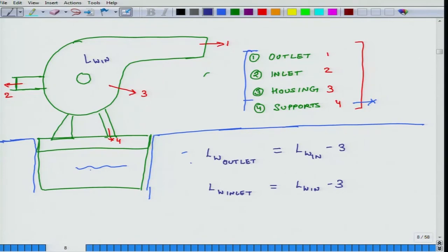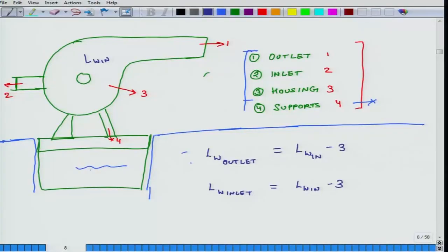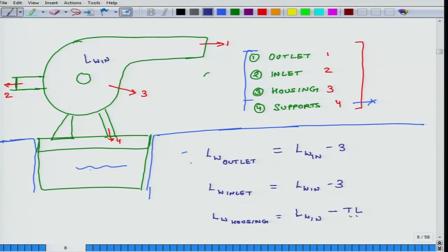The same argument holds for the inlet: LW_inlet = LW_in minus 3 dB. For the housing, LW_housing = LW_in minus the transmission loss. The transmission loss depends on how stiff the housing is — a flimsy housing vibrates easily and is a larger source of noise. The transmission loss number will be specified by the supplier or vendor, and all these values are frequency-specific, including the transmission loss data.